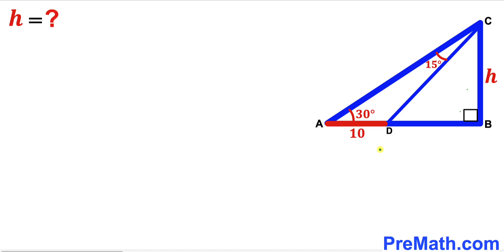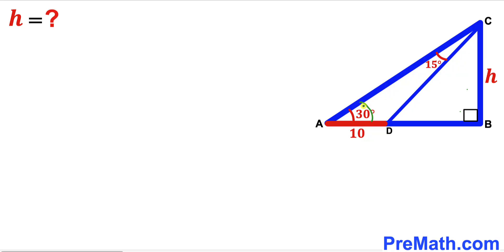Welcome to pre-math. In this video we have got a right triangle ABC along with a line segment CD such that segment AD is 10 units. The angle CAD is 30 degrees and the angle ACD is 15 degrees. Furthermore, the perpendicular BC is represented by lowercase h, and our task is to find the value of this height h.